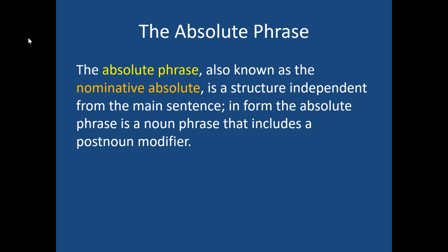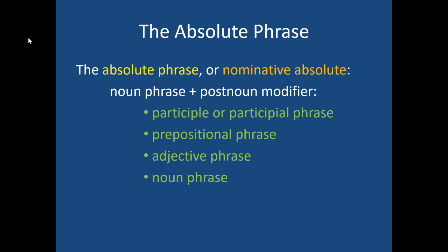An absolute phrase is sometimes referred to as a nominative absolute. It's a structure that's independent from the main sentence — completely separate — and we'll see that when we diagram it separately from the rest of the sentence. In form, it's a noun phrase with a post-noun modifier: a noun followed by something. It can be followed by a participle or participle phrase, a prepositional phrase, an adjective phrase, or another noun phrase. The key point is there's no verb. A participle sounds like a verb but isn't, because it lacks a to-be verb. It's a noun phrase floating, not attached to anything.